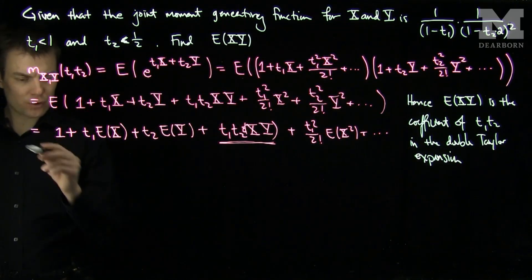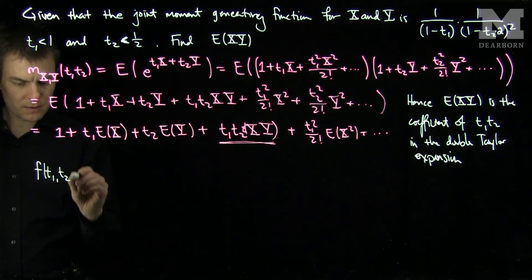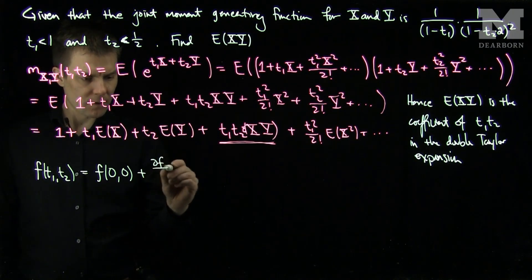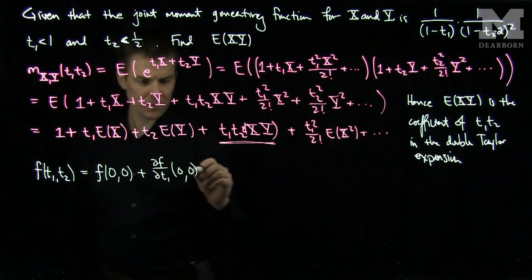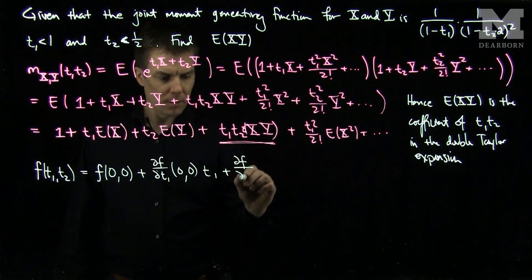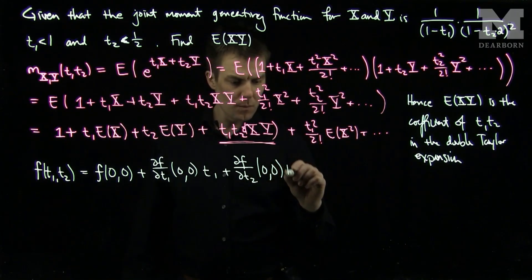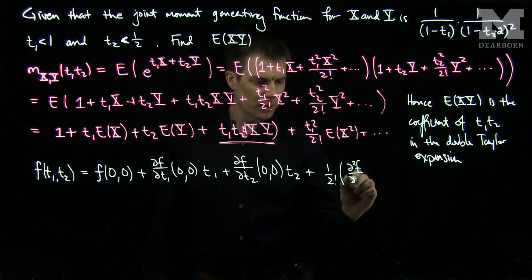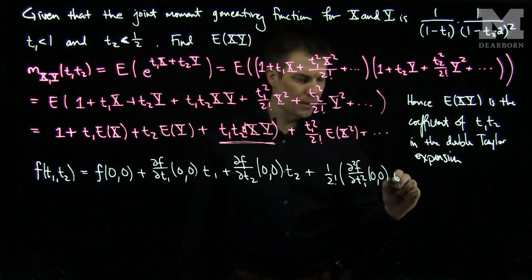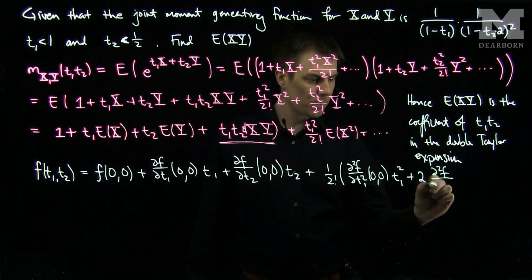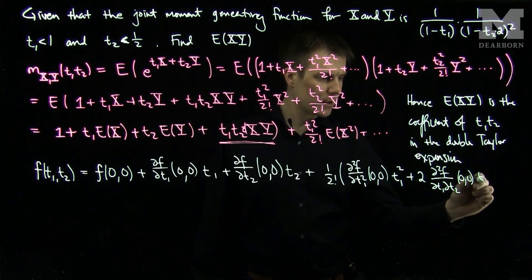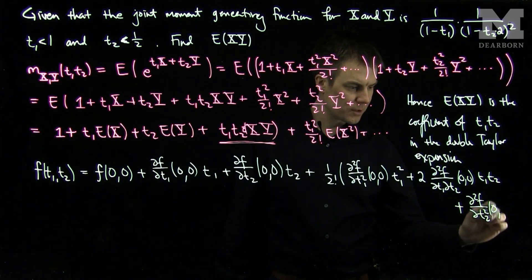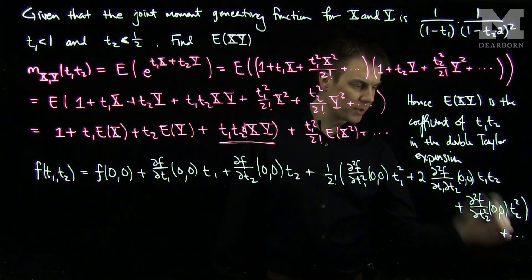We can notice that for a general double Taylor expansion, f(t1, t2) equals f(0,0), plus the partial of f with respect to t1 at (0,0) times t1, plus the partial of f with respect to t2 at (0,0) times t2, plus 1 over 2 factorial times the second partial of f with respect to t1 and t2 at (0,0) times t1*t2, plus the second partial with respect to t2 and t1 at (0,0) times t1*t2, plus the second partial with respect to t2 squared at (0,0) times t2 squared, plus higher order terms.